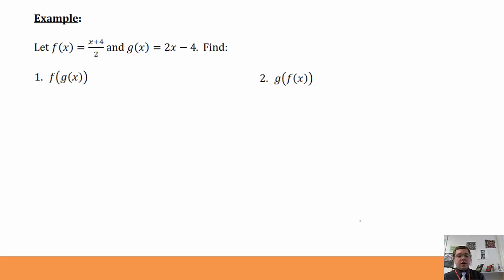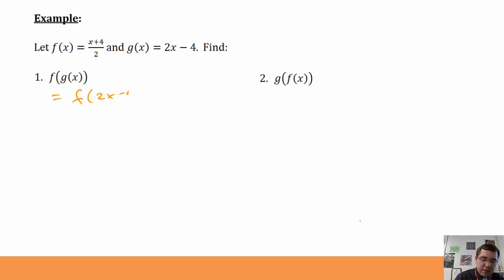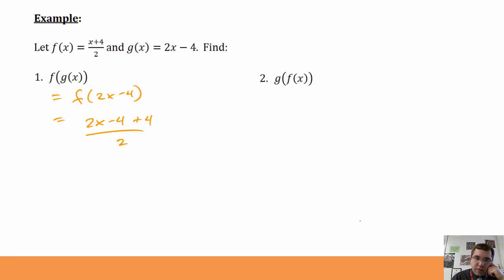Let f of x be x plus 4 over 2, and g of x be 2x minus 4. Let's find these two new functions by composing f and g. For f of g of x, I take the entire function g of x, which is 2x minus 4, and plug it into f. So it's f of 2x minus 4, which gives 2x minus 4 plus 4 over 2. That simplifies: 2x minus 4 plus 4 is just 2x, and over 2 gives x. So f of g of x is x — the identity function.